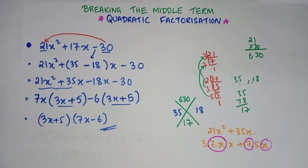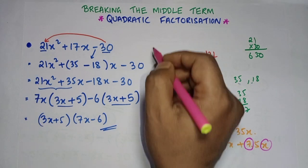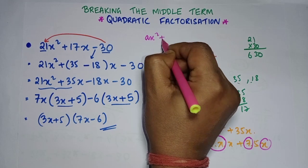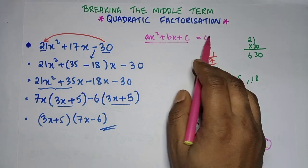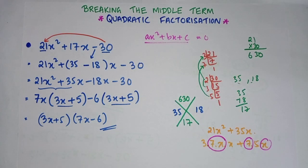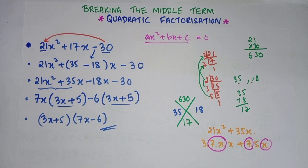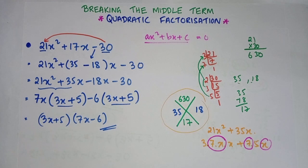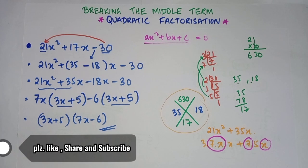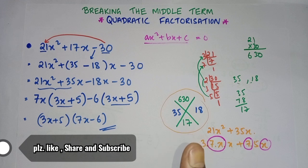Factorization by breaking the middle term applies only to quadratic equations in the form ax² + bx + c. When it equals 0, it is called an equation and we solve it. When there is no 0, it is just factorization. This is the magic cross rule. If you have understood this, please like, share, and subscribe to our channel.